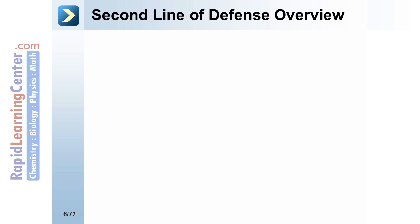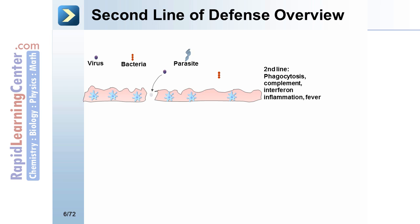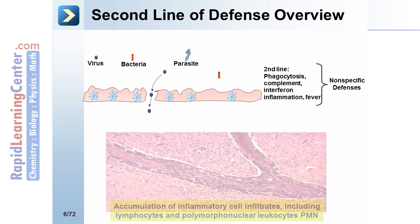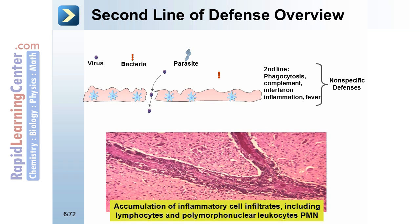Second line of defense overview in more detail. With an invader present, phagocytosis, complement, interferon, and inflammation are the primary modes of the second line of defense. Accumulation of inflammatory cells — infiltrates — including lymphocytes and polymorphonuclear leukocytes (PMN), are responses characteristic of the second line of defense.